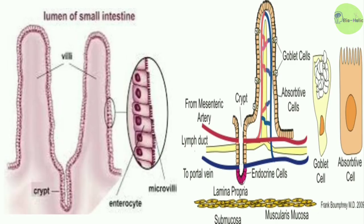These glands are lined by columnar cells and contain goblet cells, which are mainly mucus-secreting cells seen among the epithelial cells of the mucous membrane. Their number increases as we pass down through the small intestine — being few in the duodenum and most numerous in the terminal ileum.